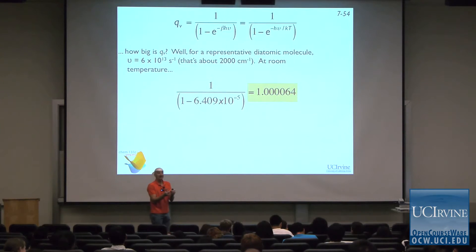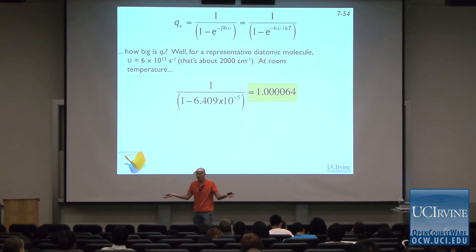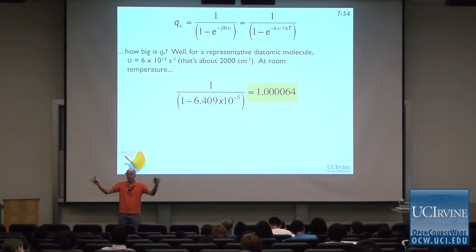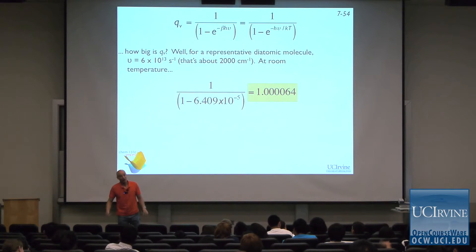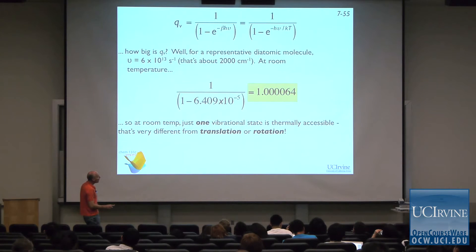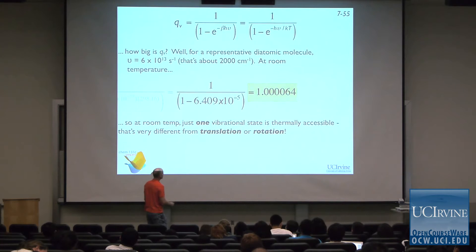It is unusual for vibrationally excited states to be populated at room temperature — that would only happen with really heavy atoms like I₂. Iodine has a vibrational energy of 214 wave numbers. How much thermal energy is there at room temperature? About 200 wave numbers. So iodine is excited — but those are 226 g/mol atoms, basically bowling balls that are barely moving. It doesn't take much energy to excite that vibration, so at room temperature it is excited — but it's the exception. At room temperature, just one vibrational state is thermally accessible in general — very different from translation or rotation.